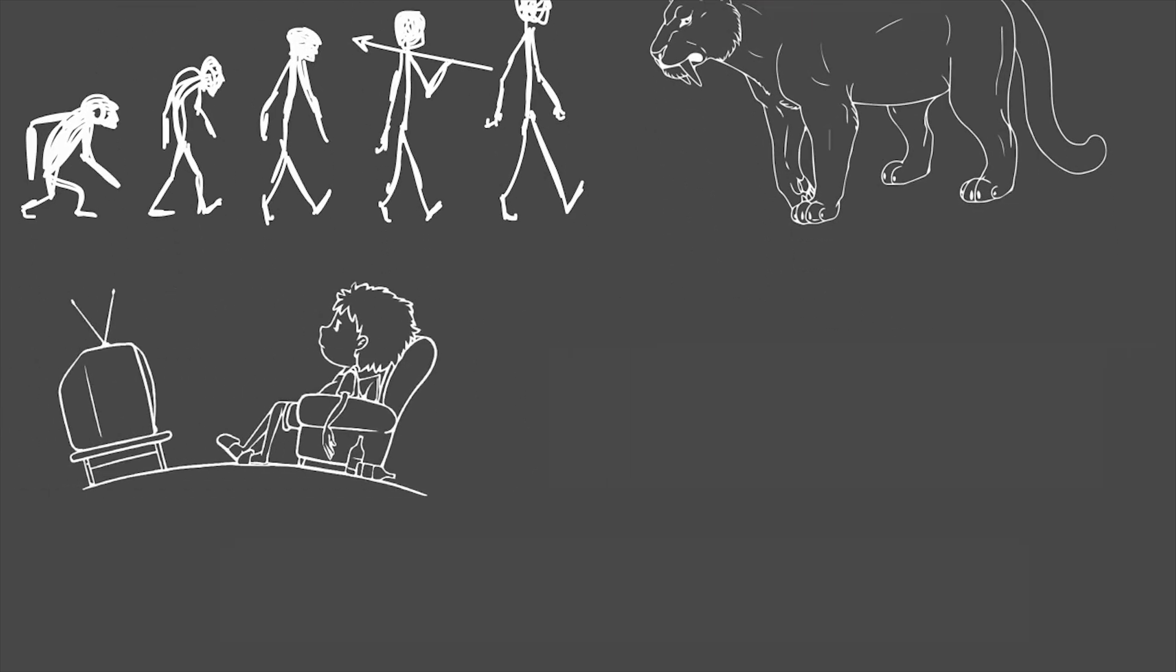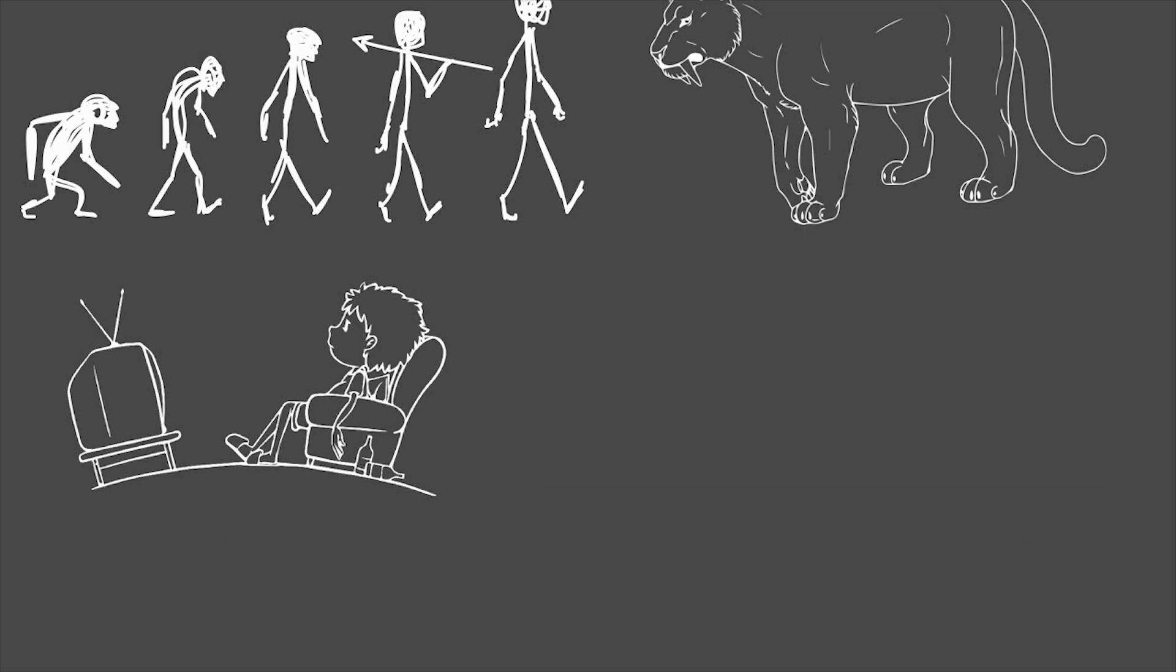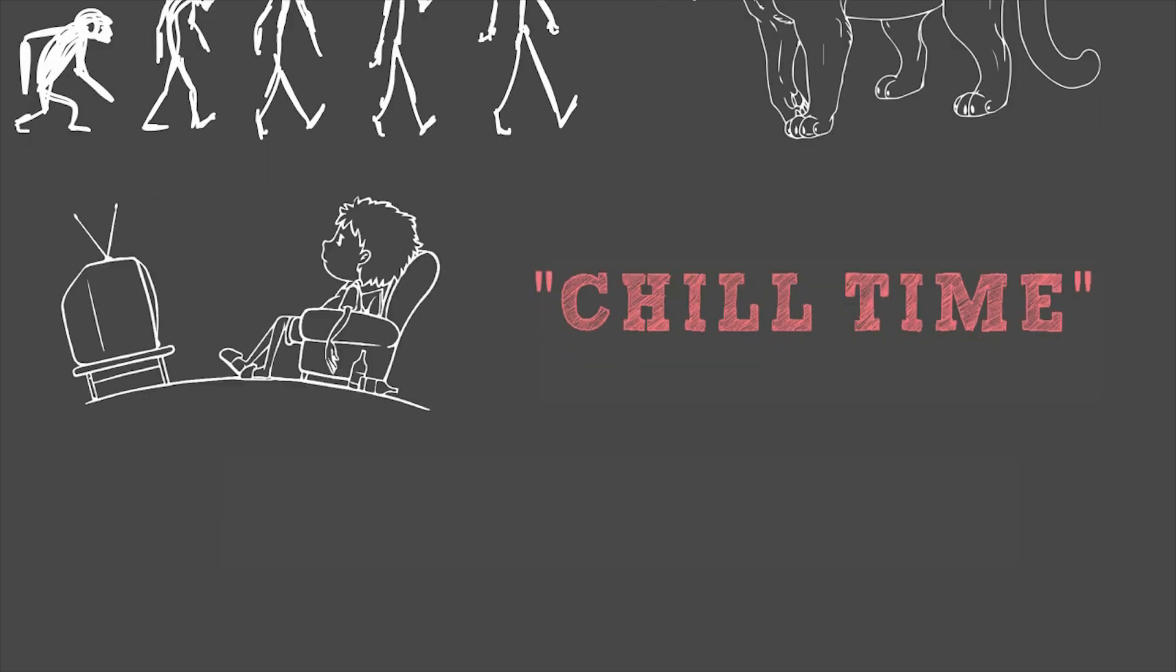When you are sitting on your couch watching television, you signal your brain that nothing important is happening and it's time for rest. Exercise also affects the areas of the brain responsible for motivation and action. The reward center is one of the most important areas in the brain. Dopamine is a key player in the reward system.